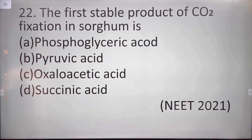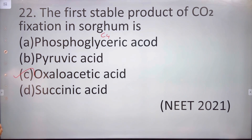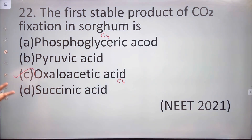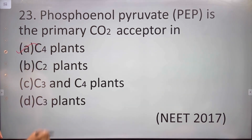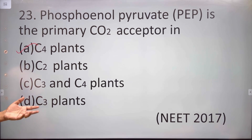The first stable product of carbon dioxide fixation in a C4 plant is oxaloacetic acid — a 4-carbon compound. Phosphoenolpyruvate (PEP) is the primary carbon dioxide acceptor in C4 plants. In C3 plants, the primary carbon dioxide acceptor is RuBP.